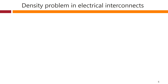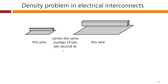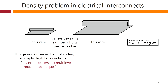The basic density problem of electrical interconnect wiring can be summed up quite simply. A small wire carries the same number of bits per second as a larger wire. As we scale the wiring up or down, we don't allow ourselves to carry any more information. It's a scale-invariant property of the capacity of wires, big and small. This gives us a universal form of scaling for simple digital interconnections with electrical wiring — not talking here about repeaters or multi-level modem techniques.